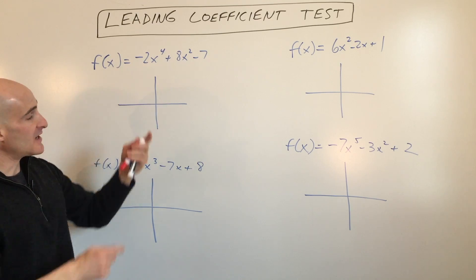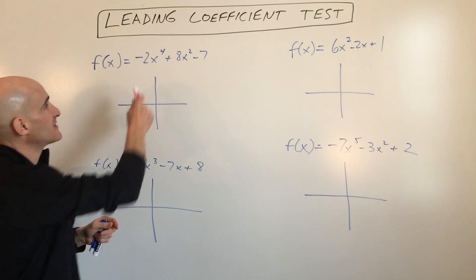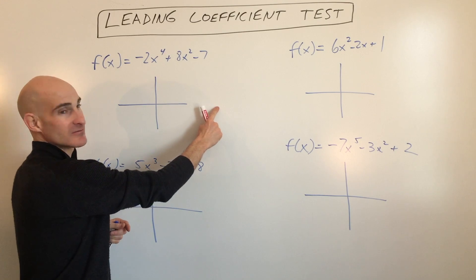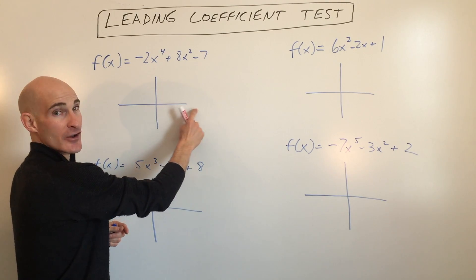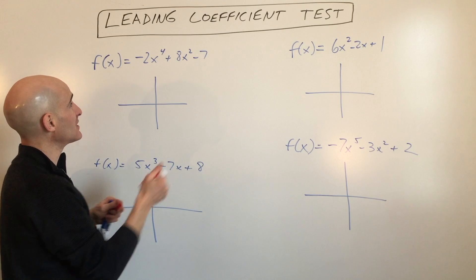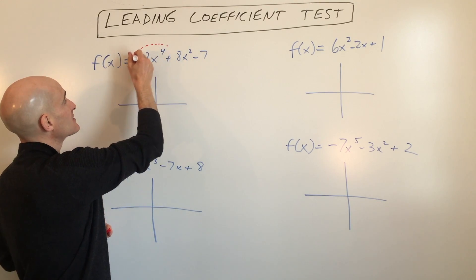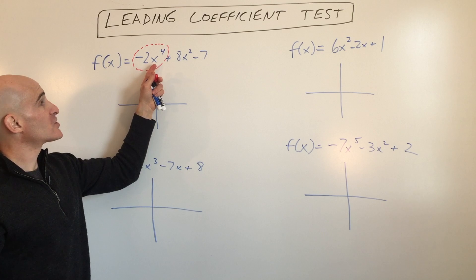And if it's negative, what that tells you is that as x gets larger and larger—10, 100,000, going towards positive infinity—this term is going to be the most influential term.